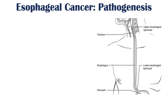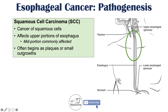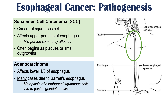Squamous cell carcinoma is a cancer of squamous cells and is more likely to affect the upper and mid portions of the esophagus. It often begins as a plaque or small outgrowth of cells, which can lead to carcinoma in those upper portions more often than adenocarcinoma.